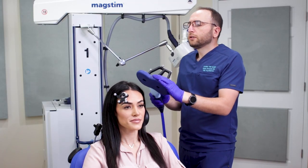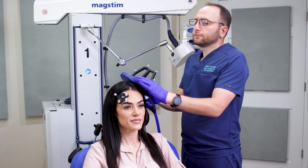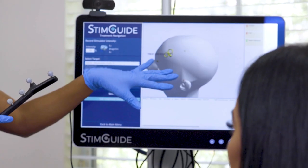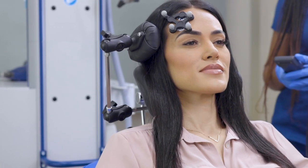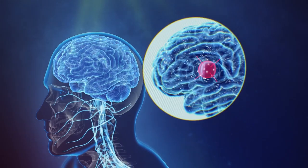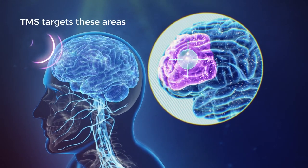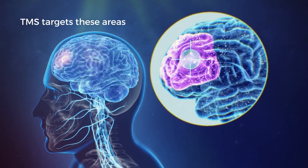With navigated TMS, we're using 3D spatial cameras to track the positioning of the coil relative to the patient's head at all times. That means that every single pulse is delivered exactly where it was intended to be, which increases the patient's chances of having successful TMS treatment and hence recovery from depression.